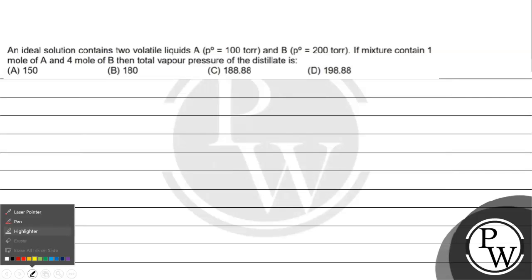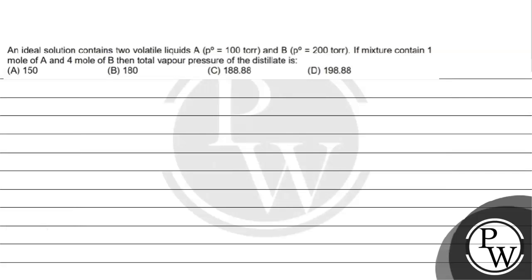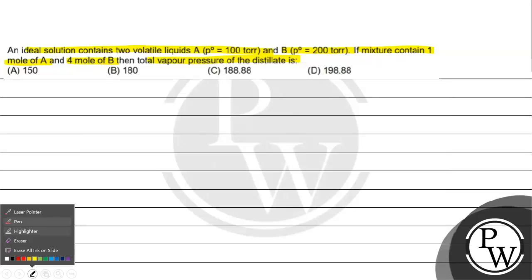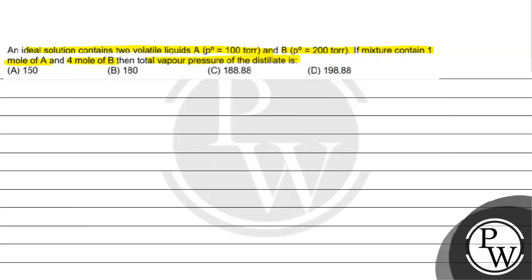Let's read this question. An ideal solution contains two volatile liquids A with P⁰ = 100 torr and B with P⁰ = 200 torr. If the mixture contains one mole of A and four moles of B, then the total vapor pressure of the distillate is: option A: 150, option B: 180, option C: 188.88, option D: 198.88.